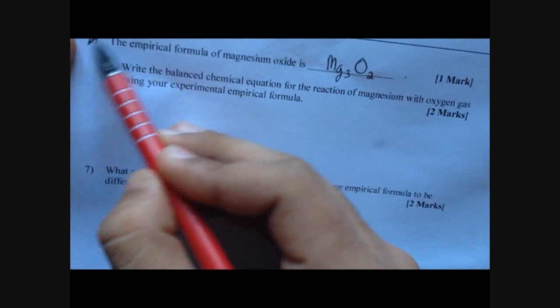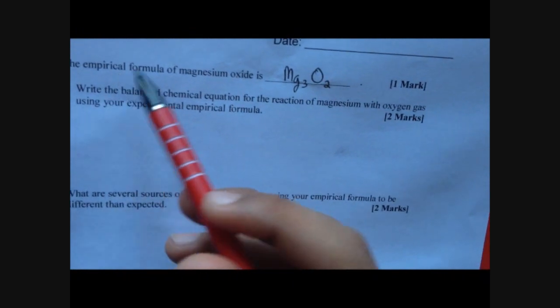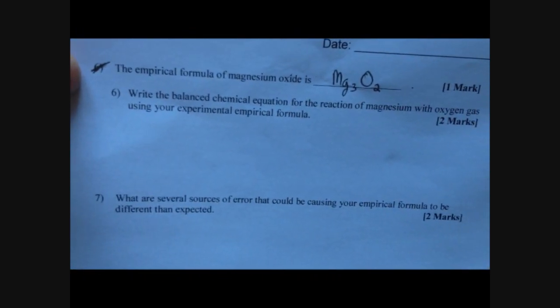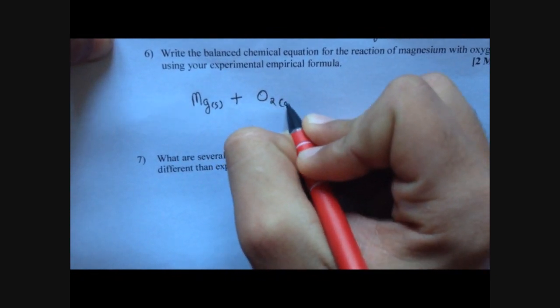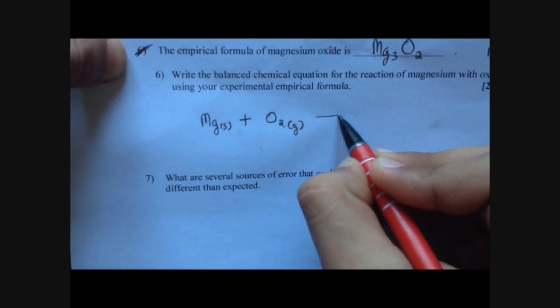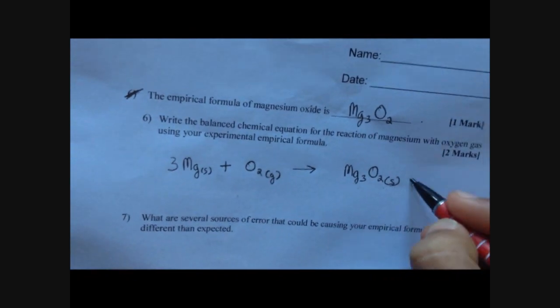Question 6: Write the balanced chemical equation for the reaction of magnesium with oxygen gas using your experimental empirical formula. We had magnesium solid plus O2 gas, which gave us Mg3O2 solid. We have 3 magnesiums on the right, so put 3 in front of Mg on the left. Now: 3 magnesiums on left, 3 on right; 2 oxygens on left, 2 on right. The equation is balanced.